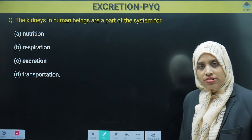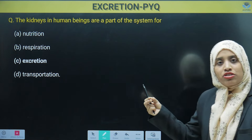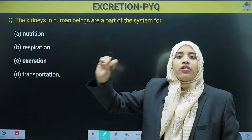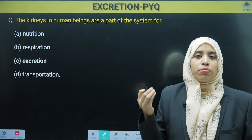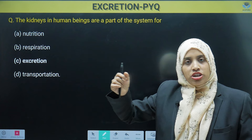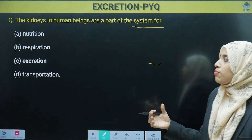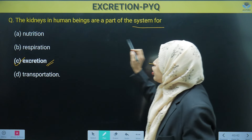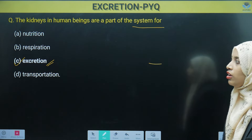The kidney in human beings is a part of the system for: nutrition, respiration, excretion, or transportation? Nutrition is a way of taking food. Respiration involves oxidation of food. Excretion is the removal of waste products. Transportation involves circulation of blood, water, and minerals. The kidney is part of the excretory system because excretion takes place through the kidney. So we can mark option number C — excretion.